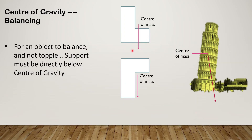Center of gravity balancing: for an object to balance and not topple, support must be directly below the center of gravity. For example, the Leaning Tower of Pisa does not topple over because its center of gravity does not extend beyond its base, and so the tower has stood for centuries without falling down.